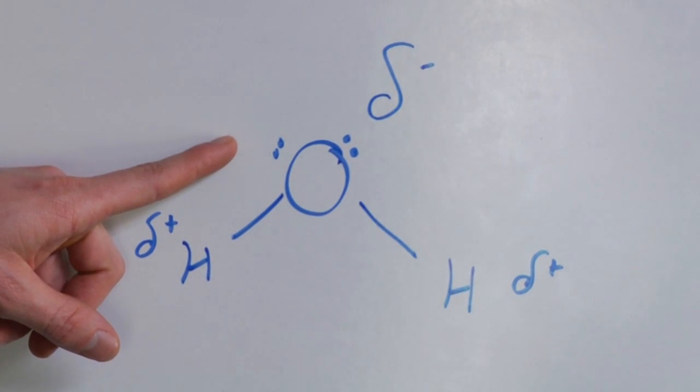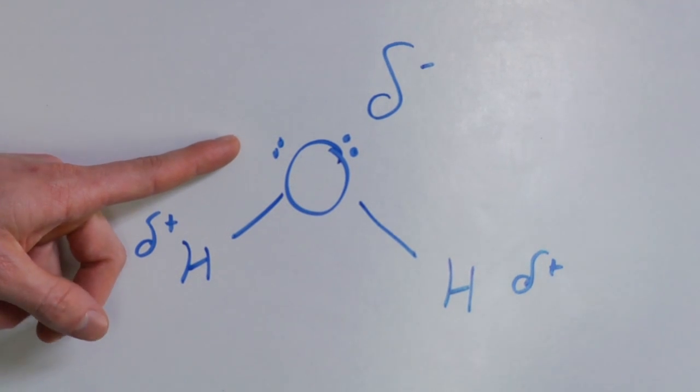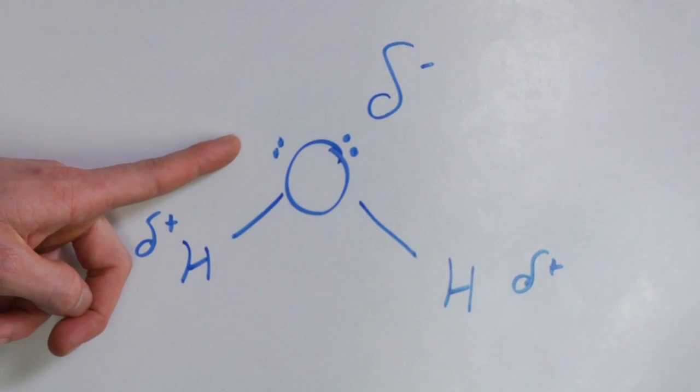The result is that oxygen tends to hog electrons a little bit, and in turn there's a slight negative charge that surrounds the oxygen.